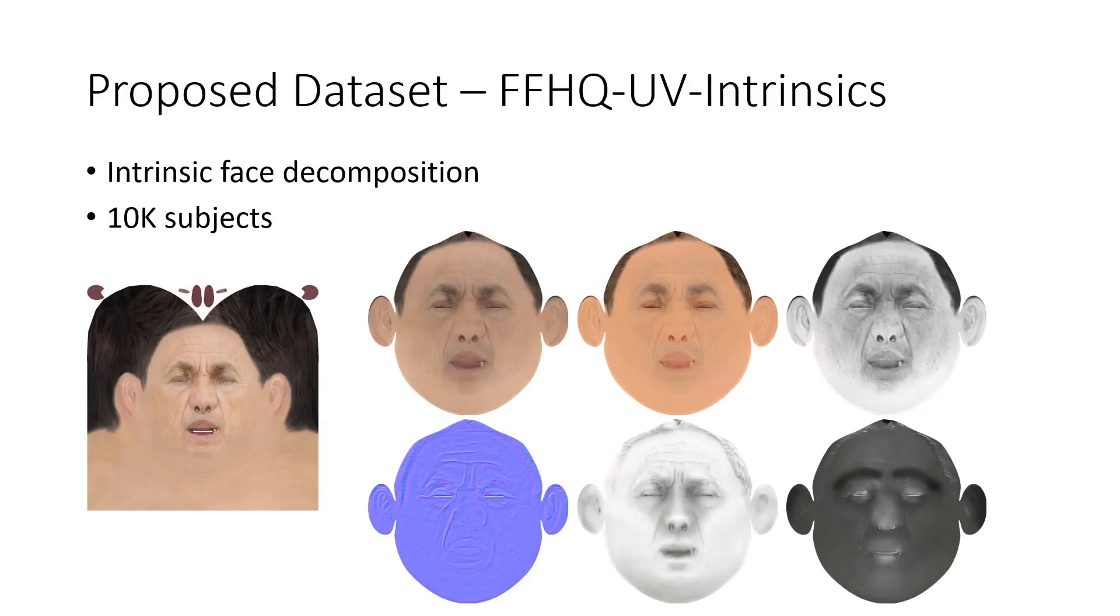We are also introducing a new public dataset called FFHQ-UV Intrinsics. This dataset contains intrinsic texture maps for 10,000 subjects from the FFHQ-UV dataset. Namely, we produce a light normalized texture, diffuse, specular, normal, ambient occlusion and thickness maps. This dataset aims to accelerate research in this field.